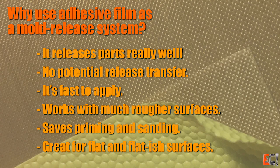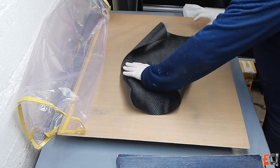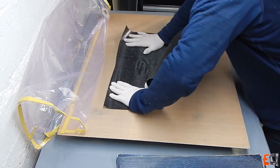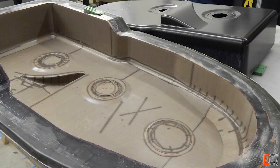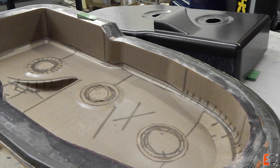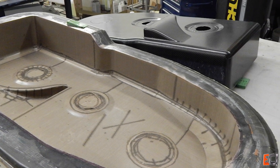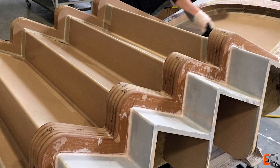When does it work well? It releases parts really well, and there's no transfer. It's fast to apply, you don't need a primer underneath there, or lots of perfect sanding and polishing. It works great for tables, and it can handle plenty of heat, so prepreg is perfect. And it's great even for complicated tools like this where it releases really well with very little draft, or here where you're using a sealed wood surface. You just need it to come out nice.